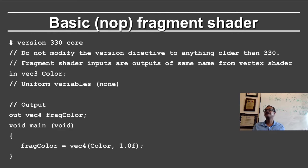Let us now look at the fragment shader. Again, I have specified version 330 core. The input is just the color that came from the vertex shader. There are no uniform variables. There is an output, which is the fragment color, which will actually be displayed on the screen. All that it does is set the fragment color equal to the input color, converting from RGB to RGBA by setting the alpha variable equal to 1.